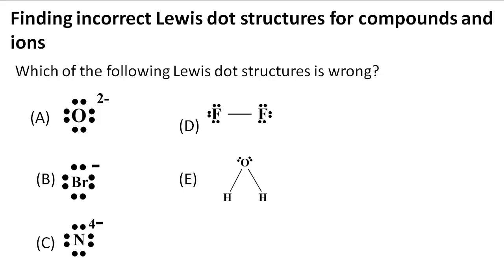Finding incorrect Lewis dot structures for compounds and ions. In this example problem, it says which of the following Lewis dot structures is wrong. So they want us to look through the answer choices and find out which one is wrong.